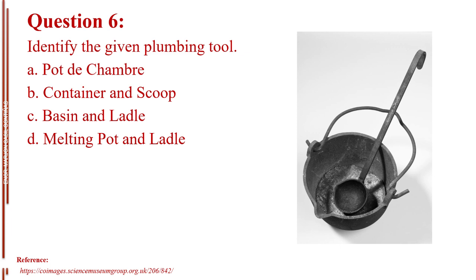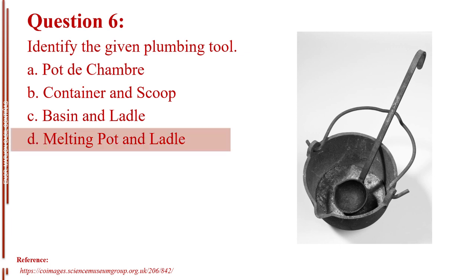Question number six. Identify the given plumbing tool. Letter A, pot to chamber. Letter B, container and scoop. Letter C, basin and ladle. Letter D, melting pot and ladle. The answer is Letter D, melting pot and ladle.